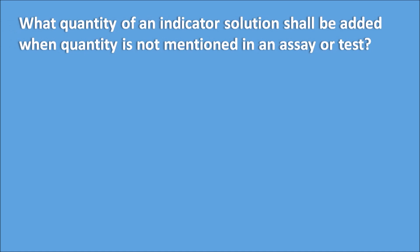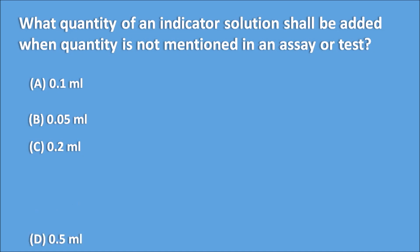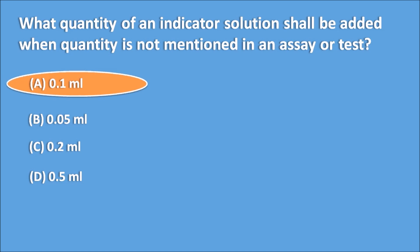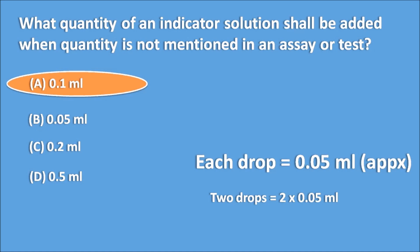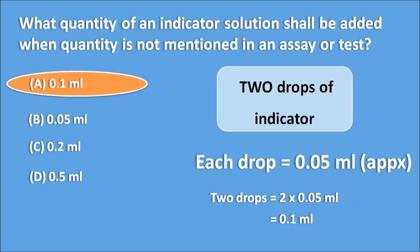Next question: what quantity of an indicator solution shall be added when the quantity is not mentioned in an assay or test? Options are 0.1 ml, 0.05 ml, 0.2 ml, and 0.5 ml. The answer is 0.1 ml. Each drop is approximately 0.05 ml, so two drops equals 0.1 ml. Whenever a quantity is not specified, two drops of the indicator — that is 0.1 ml — should be added.